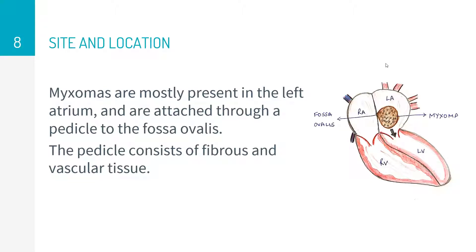The most common site is the left atrium, where the myxoma is attached to the fossa ovalis — the small opening in the interatrial septum from your embryology. Right atrial myxomas and those arising from the ventricle also occur but are rare. The myxoma itself is attached to the fossa ovalis through a pedicle containing fibrous and vascular tissue.